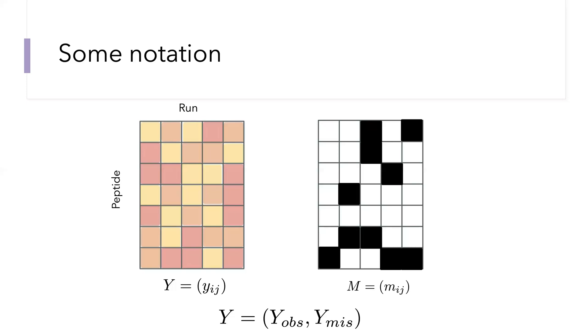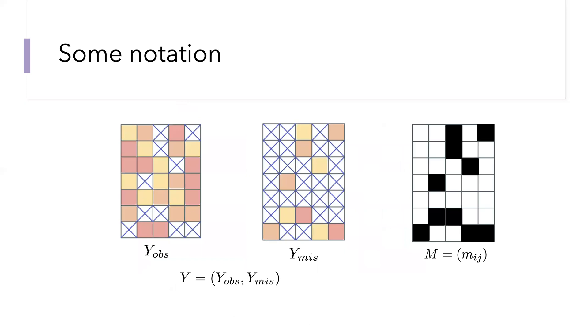We'd like to distinguish between peptides that are observed and missing using some shorthand Y_obs and Y_miss. Y_obs indicates the intensities of the peptides that we observe. Those blue X's are the missing unknown intensities. What we don't get to see is the matrix Y_miss, which contains the missing intensities. Y_obs and Y_miss together give us the complete data, what we wish we had if there were no missing values at all.